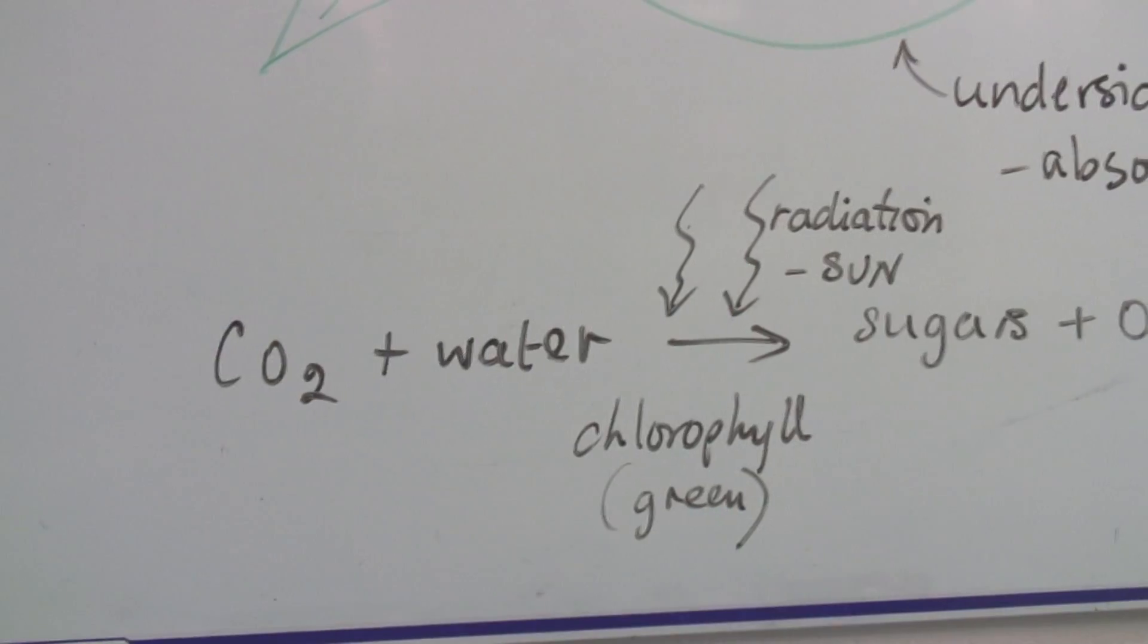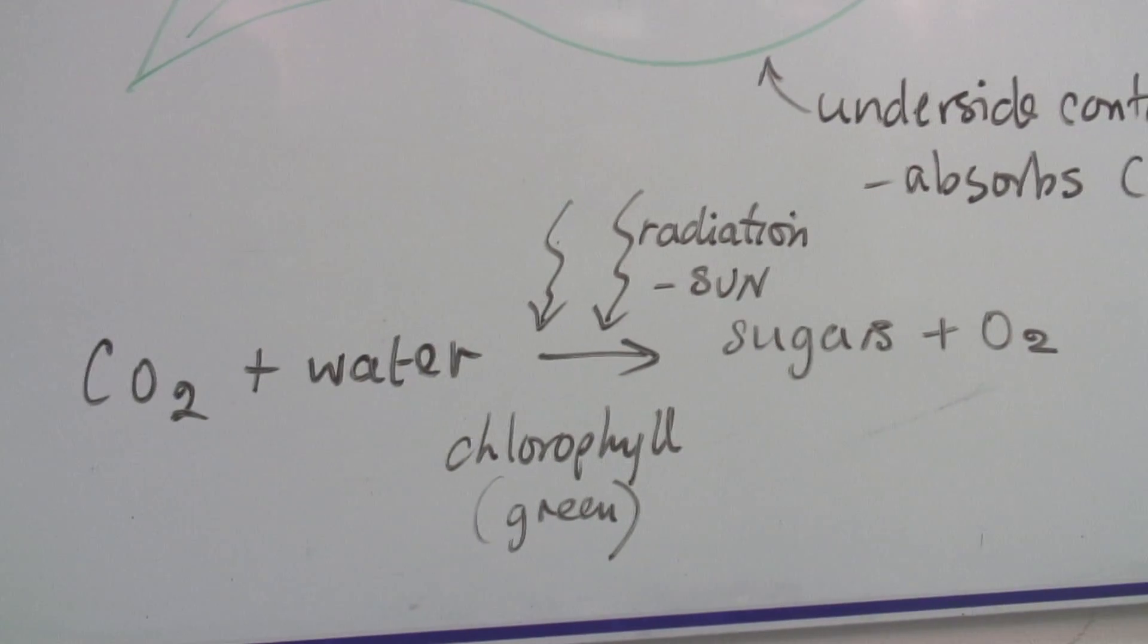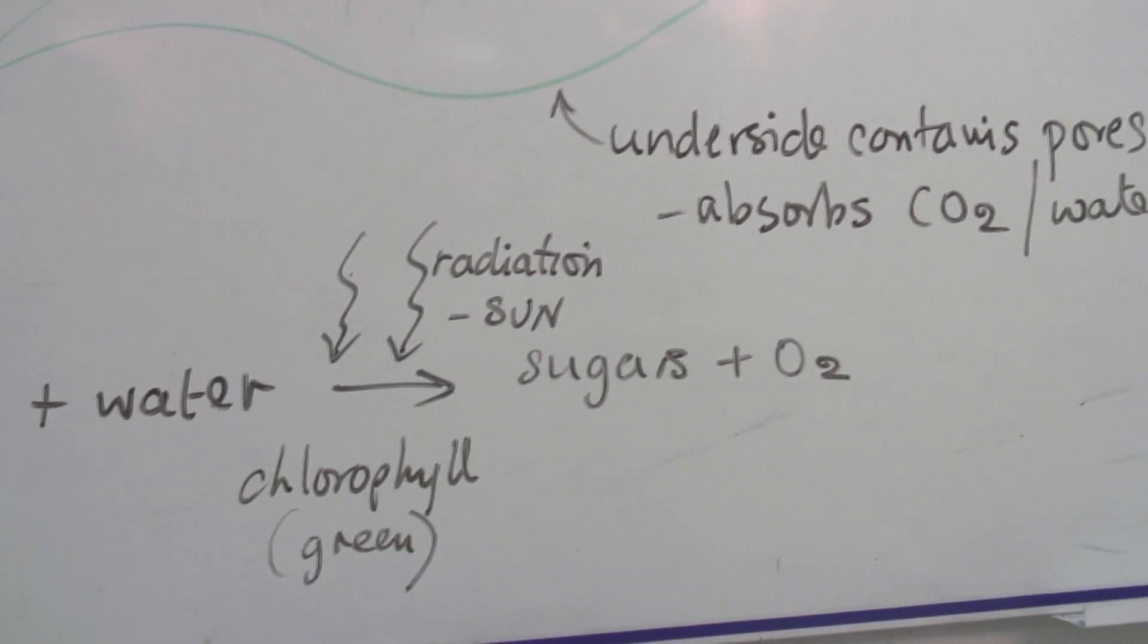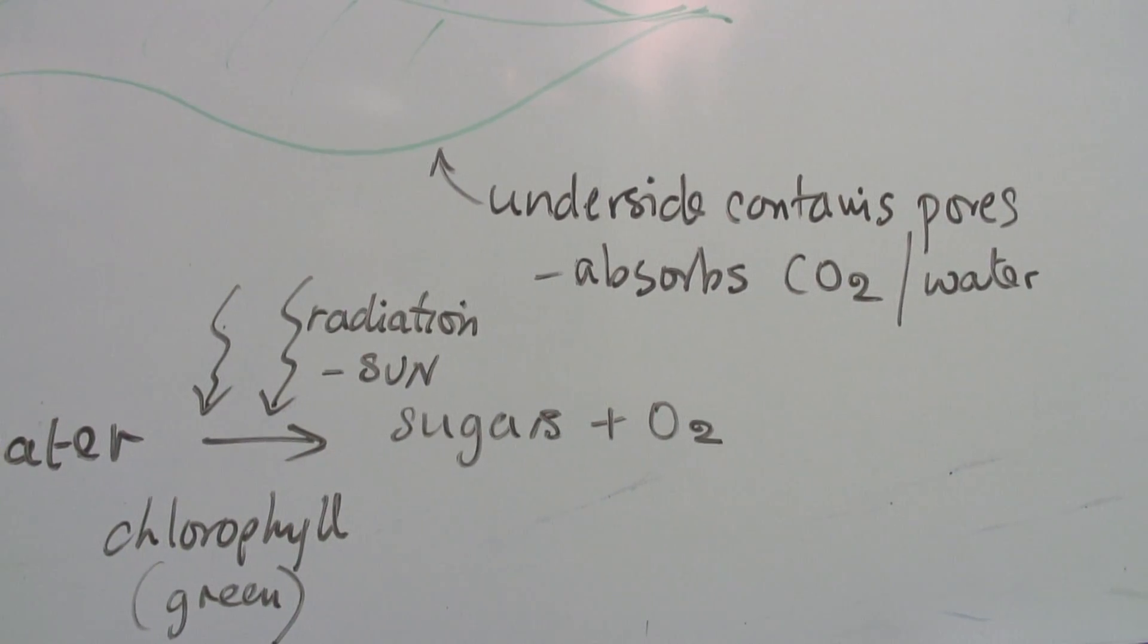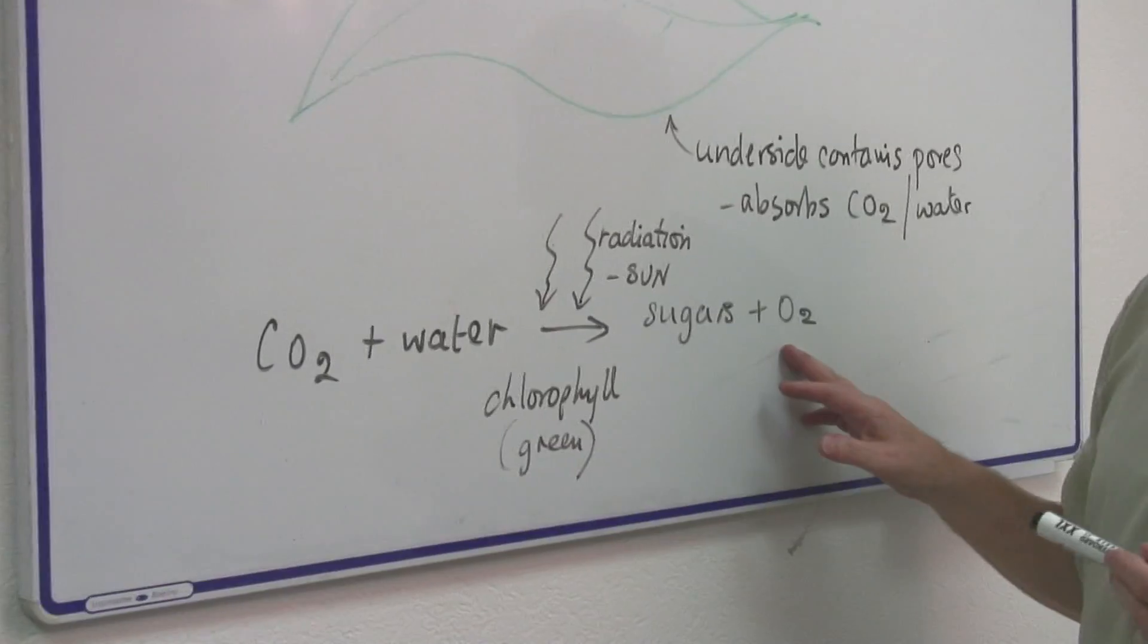Well, this is the equation and it's basically the process by which carbon dioxide and water are converted to sugars and oxygen, generally in green plants.